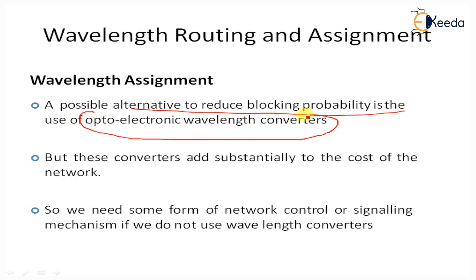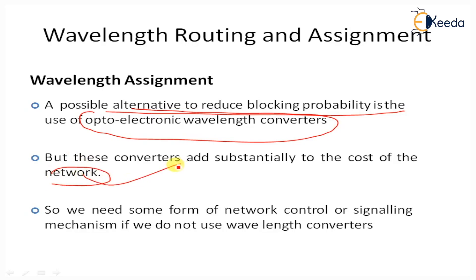A possible alternative to reduce blocking probability is the use of optoelectronic wavelength converters. These converters convert a wavelength from lambda 1 to lambda 2 and vice versa. However, these converters add substantially to the cost of the network. If wavelength converters are not used, some form of network control and signaling mechanism is needed to provide proper routing between different light paths from input to output connections in the given network.